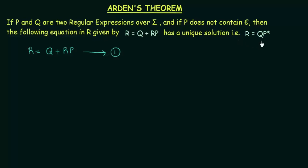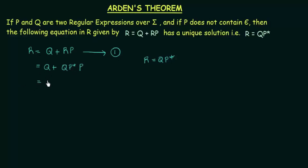We are going to prove that r = qp* is a solution to that. What I will do is replace r with qp*. So here we get: r = q + qp* · p. From here, I see that I can take out q as common. If you take out q as common, what we get is q(epsilon + p*p).